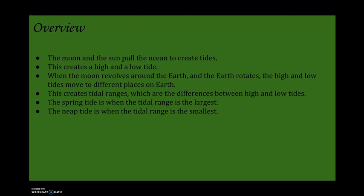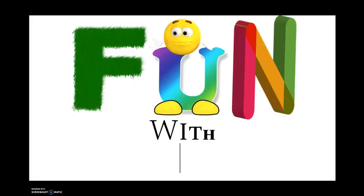An overview: the moon and the sun pull the ocean to create tides, and this creates a high and a low tide. When the moon revolves around the earth and the earth rotates, the high and low tide moves to different places on earth. This creates tidal ranges, which is the difference between high and low tide. The spring tide is when the tidal range is the largest, and neap tide is when the tidal range is the smallest. This has been an episode of Fun with Science.